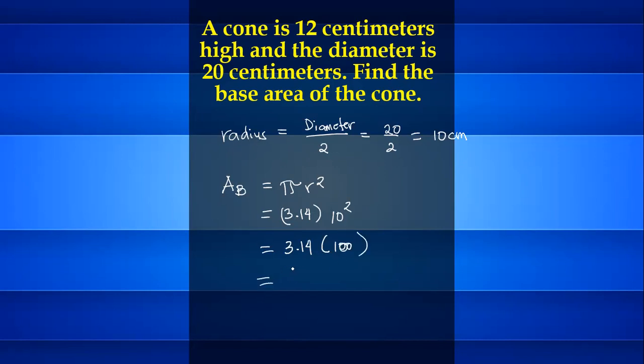100 times 3.14 is equal to 314 centimeter squared.